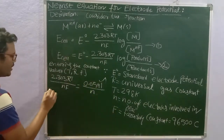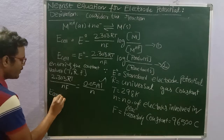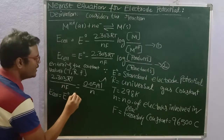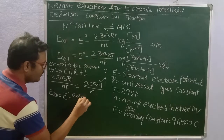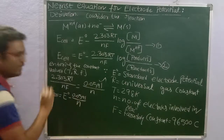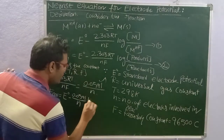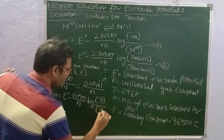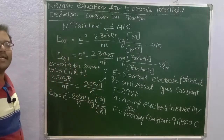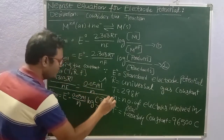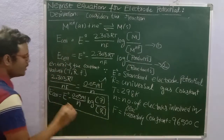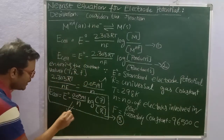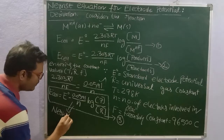Substituting the constant values — universal gas constant, temperature 298 Kelvin, and Faraday constant 96500 coulombs — into expression number 2, we get: E cell = E naught minus 0.0591 divided by n, times log of concentration of products divided by concentration of reactants. This is expression number 3, which is the Nernst equation.